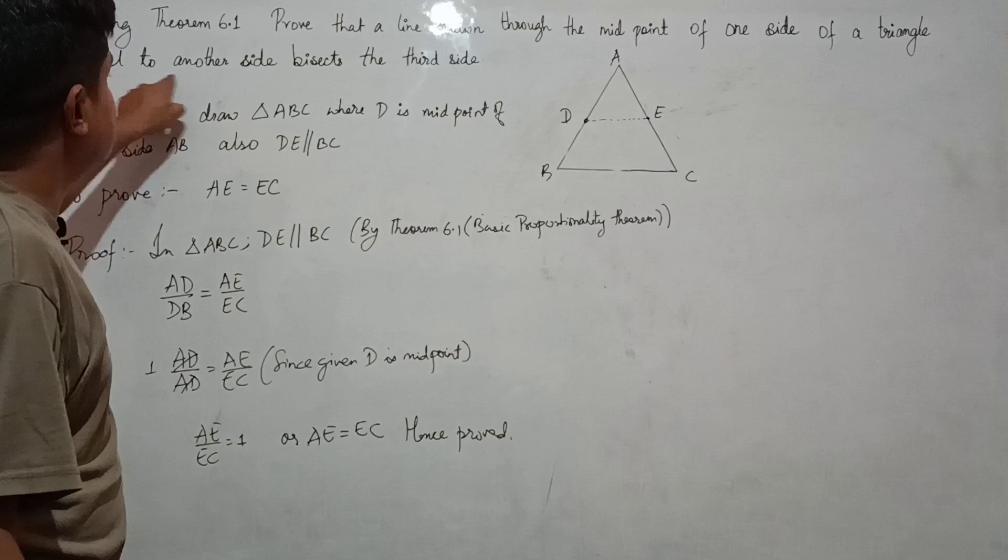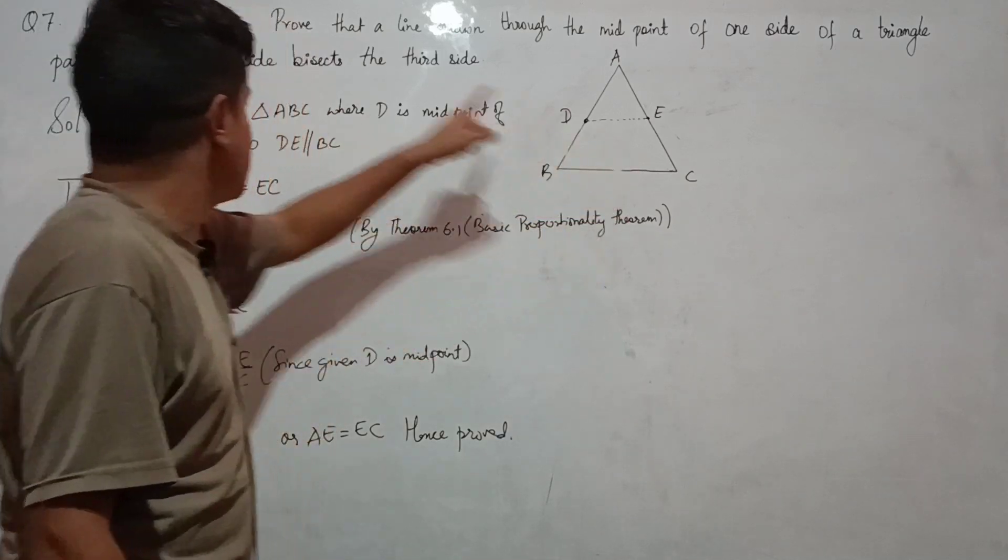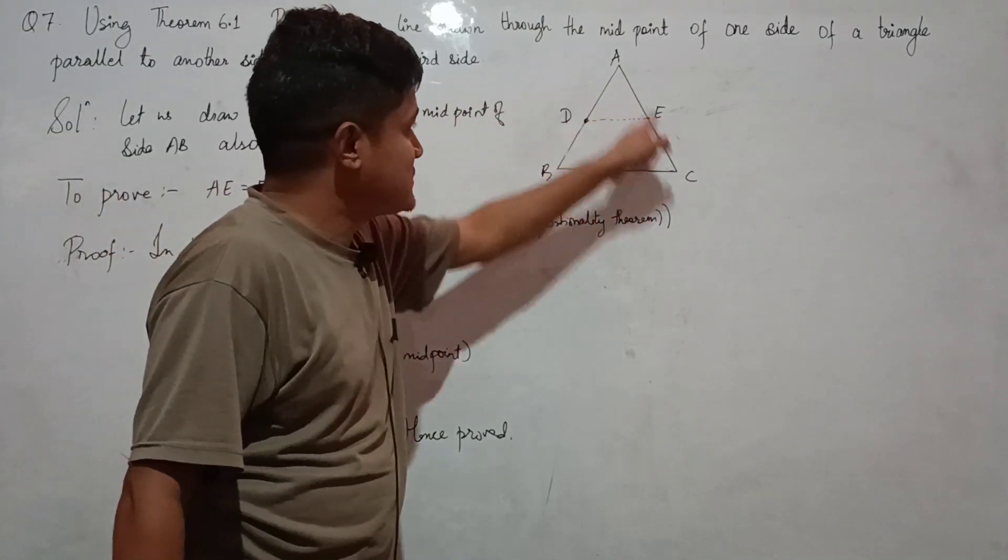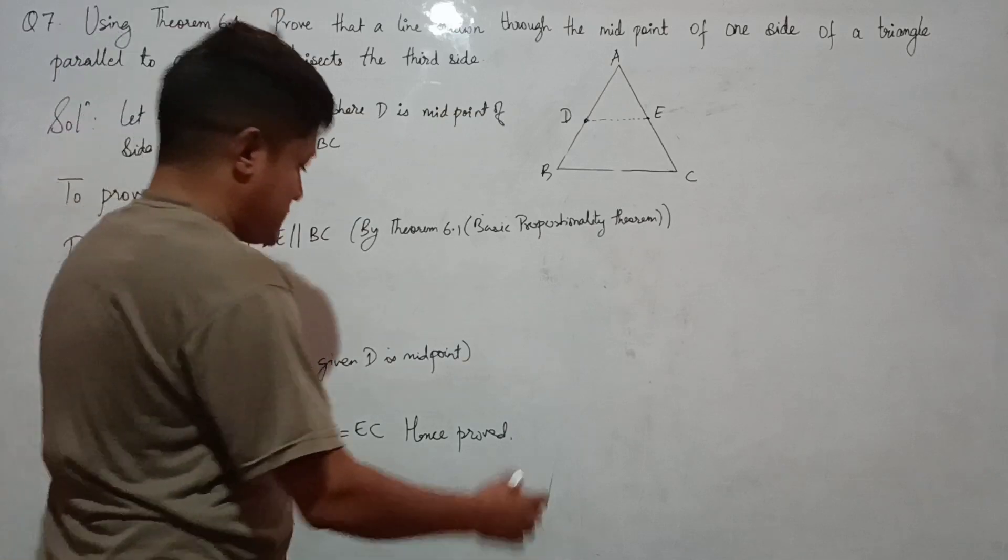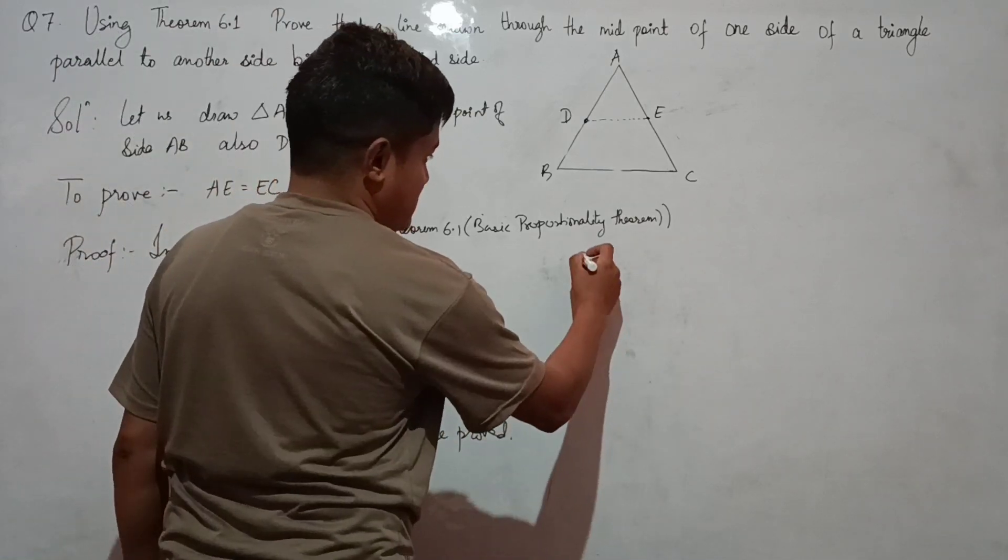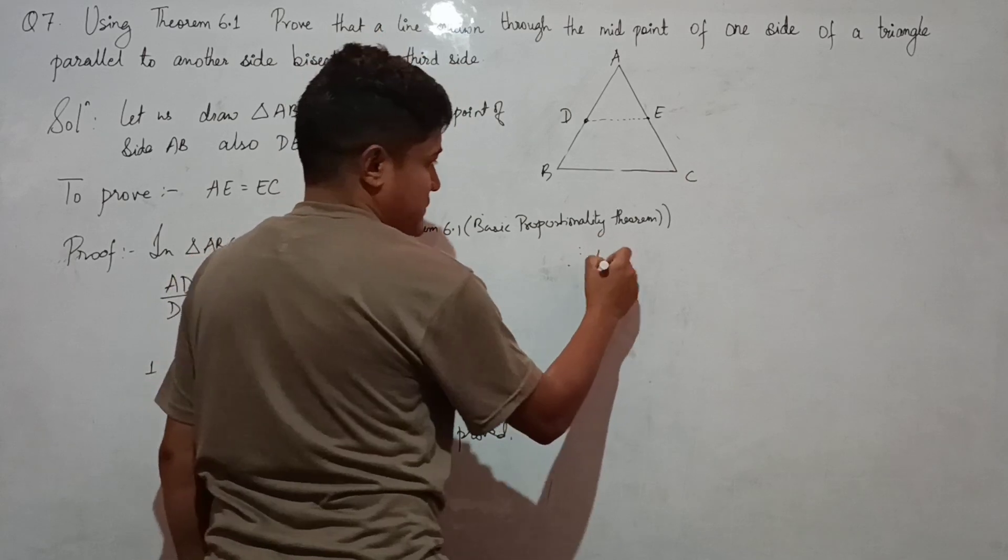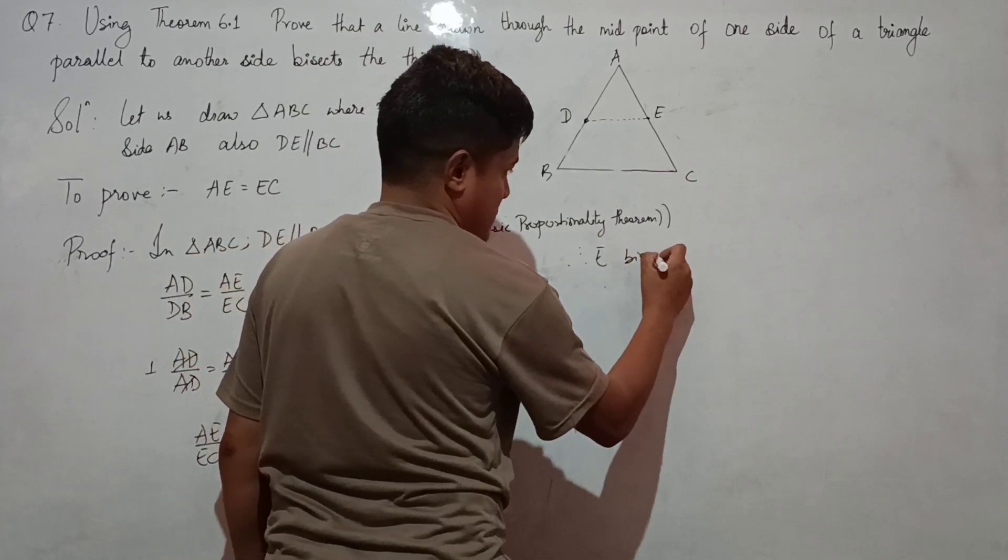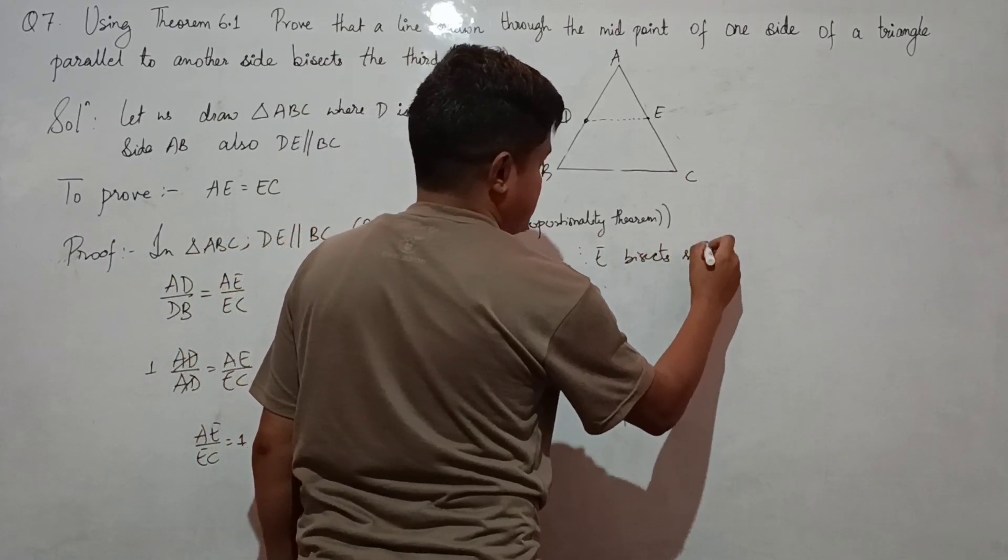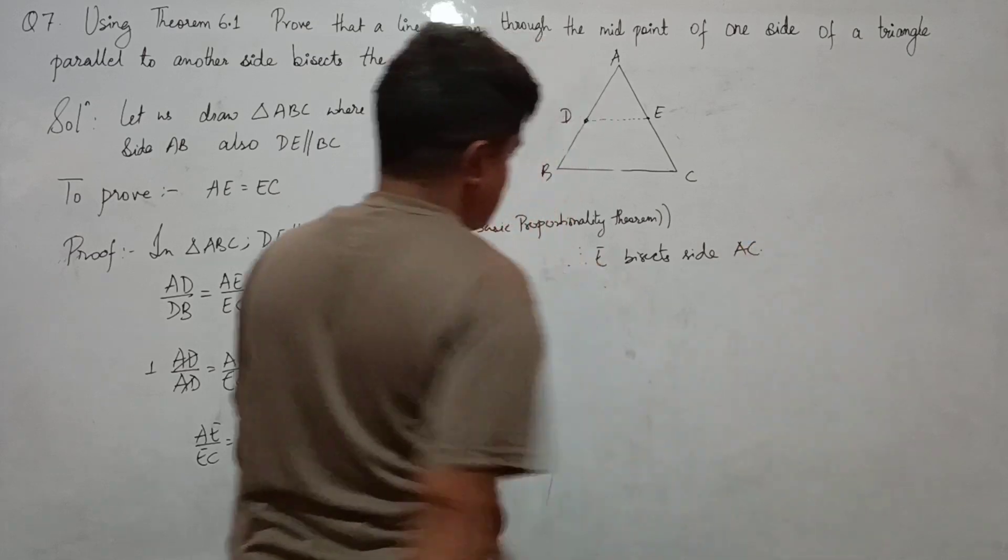Prove that a line drawn through the midpoint of one side of a triangle parallel to another side bisects the third side. Hence, therefore E bisects side AC.